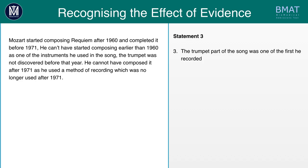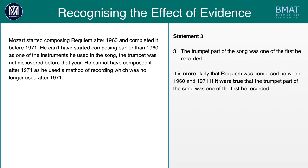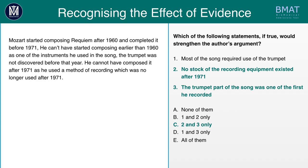Looking at statement three: the trumpet part of the song was one of the first he recorded. Find out if it's more, less, or no more or less likely that Requiem was composed between 1960 and 1971 if the trumpet part was one of the first he recorded. If it was one of the first parts recorded, it adds to the writer's case that it was recorded within those time frames. It is therefore more likely that Requiem was composed between these dates, meaning this also strengthens the argument.